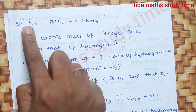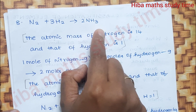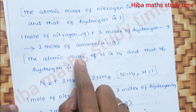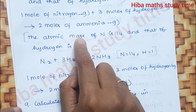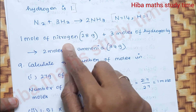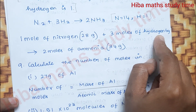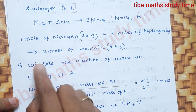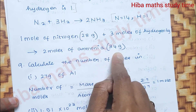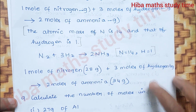Eighth question: N₂ + 3H₂ → 2NH₃. 1 mole of nitrogen = 28 grams, 3 moles of hydrogen = 6 grams, 2 moles of ammonia = 34 grams.